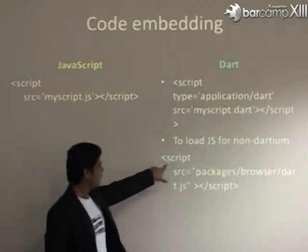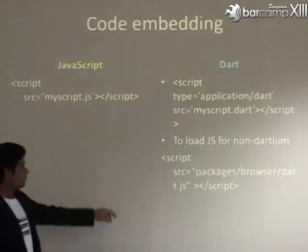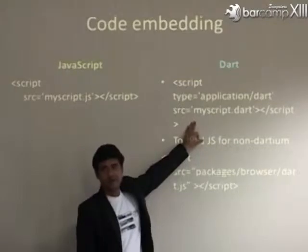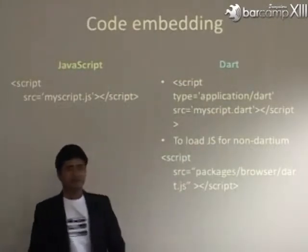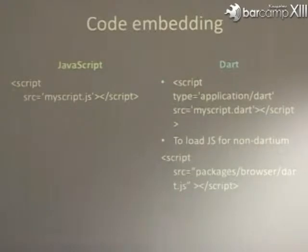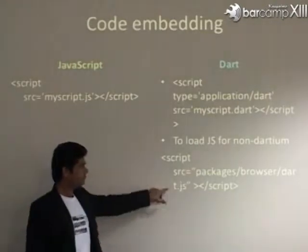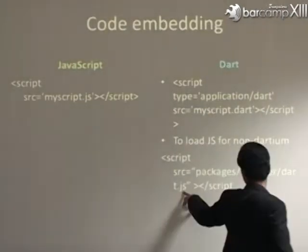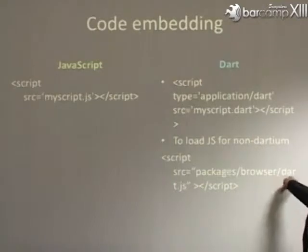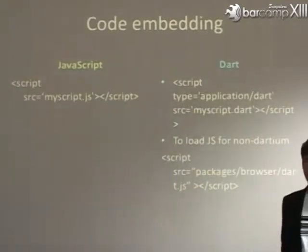For that there is a solution — just add one line in your code. What will happen? It will check if Dart VM is available on the client's machine. If so, it will load the Dart code. Otherwise, it will automatically start the Dart VM engine from the server, convert it to JavaScript, and the JavaScript version will be loaded automatically. So you don't need to worry. There is a file called dart.js, given by Dart itself — just put it in packages under the browser folder, and it will be loaded and converted to JavaScript automatically.